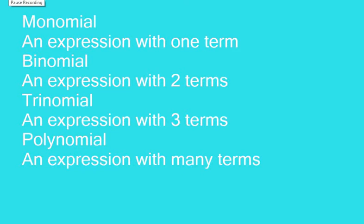So let's continue with our definitions. A monomial is an expression with one term. A binomial is an expression with two terms. A trinomial is an expression with three terms. And a polynomial is an expression with many terms.